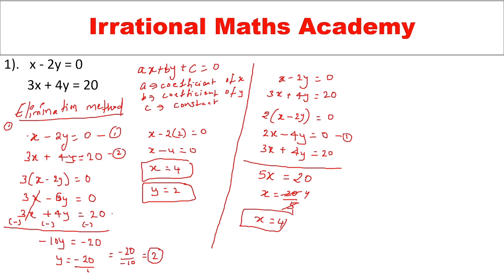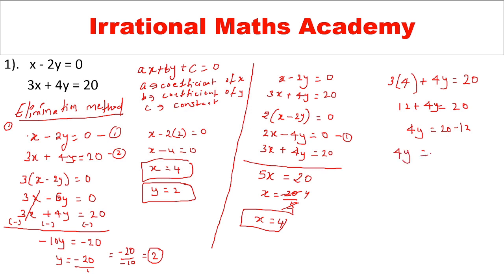Now I will substitute this x value into one of the two equations. Using the second equation: 3 times 4 plus 4y equal to 20, so 12 plus 4y equal to 20, giving 4y equal to 8, therefore y equal to 8 divided by 4, so y equal to 2.